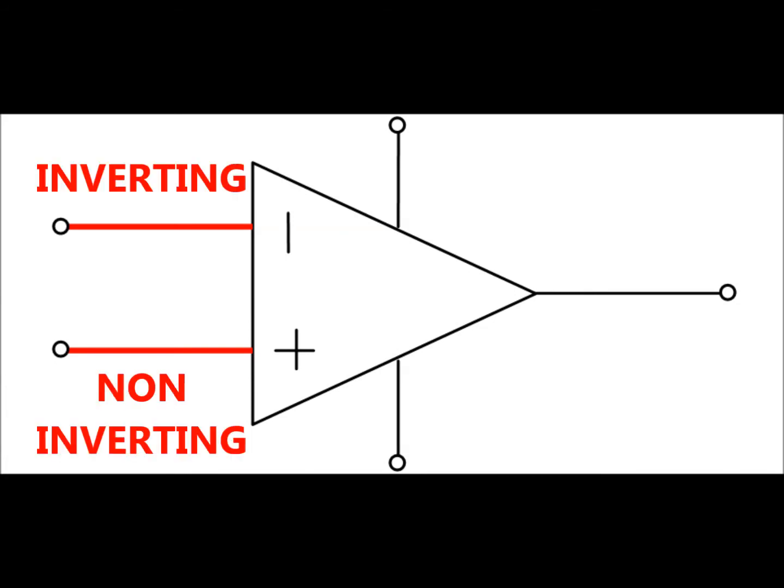The two horizontal lines on the left are the voltage inputs. The one on the top is the inverting input, which you can recognize by the minus sign. The one on the bottom is the non-inverting input, which takes the plus sign.